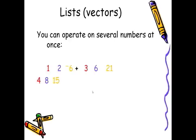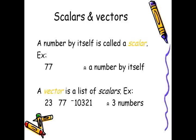1 and 2 and 6 plus 3 and 6 and 21, and APL gives you the answer right away. A number by itself is called a scalar. And a list of scalars is called a vector. For example, on top we have 77, which is a number all by itself. And look, I'm using the comments there. And three simple numbers is called a vector of numbers.